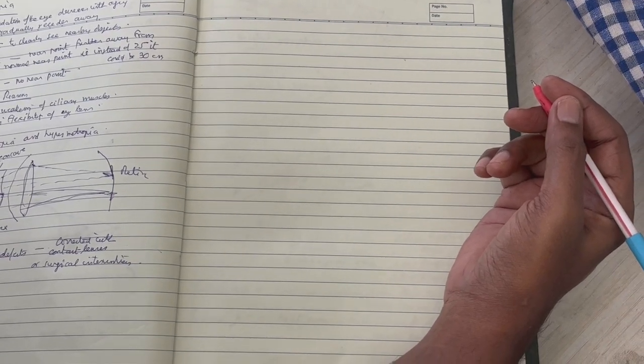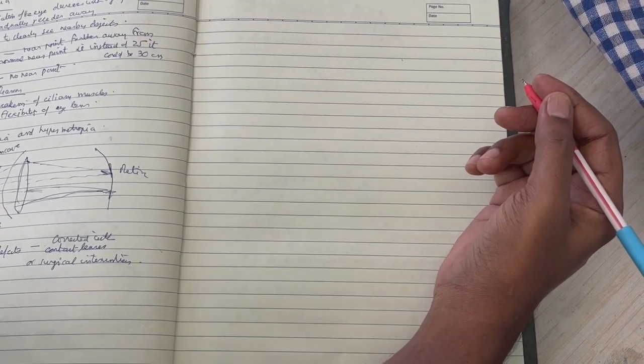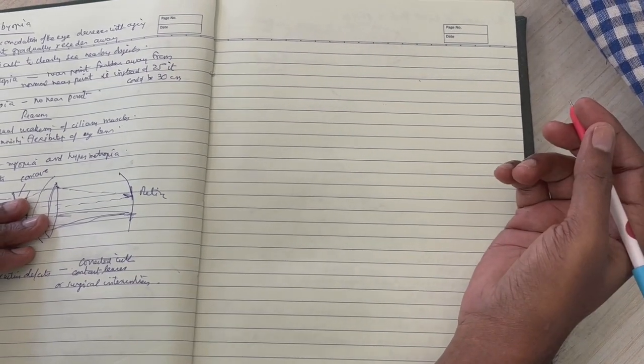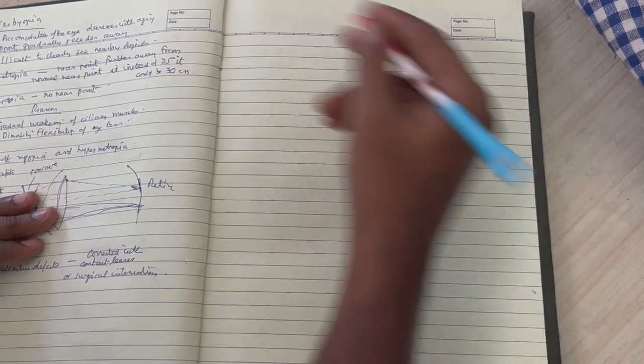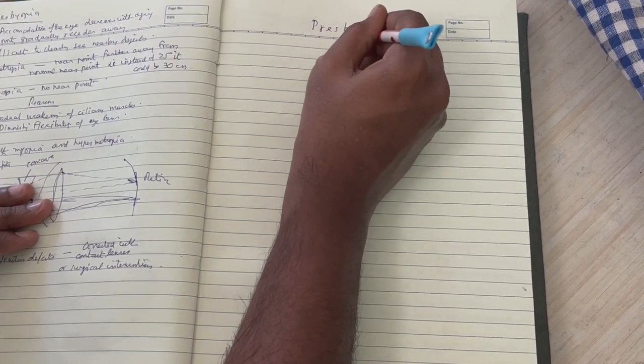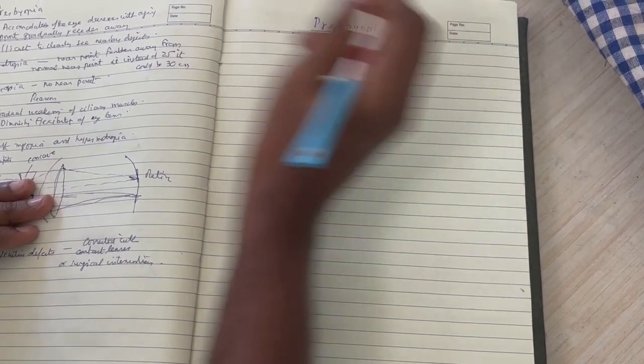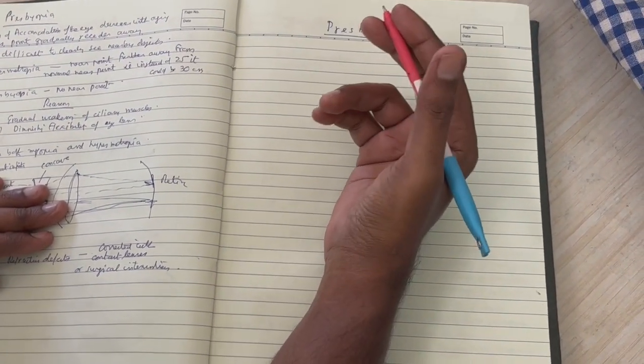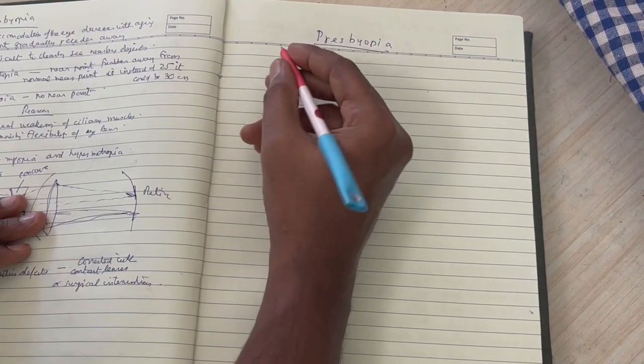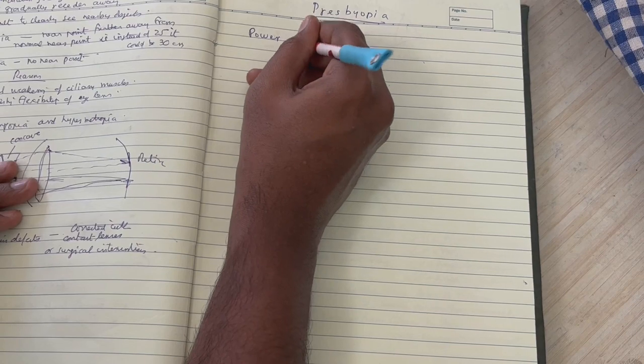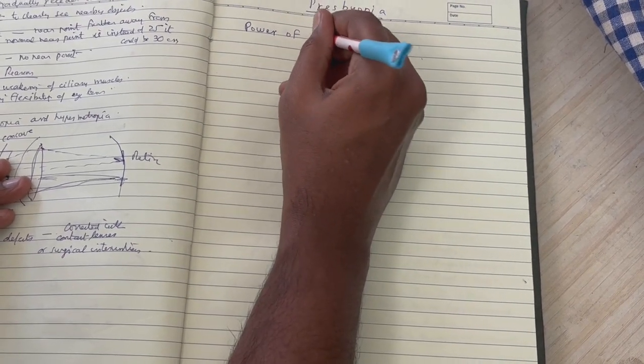So today, students, we are going to discuss the third problem related to the eye after myopia and hypermetropia - that is presbyopia. This is an interesting condition and it's usually caused due to aging. The power of accommodation of the human eye lens decreases with aging, so that's how it's caused.